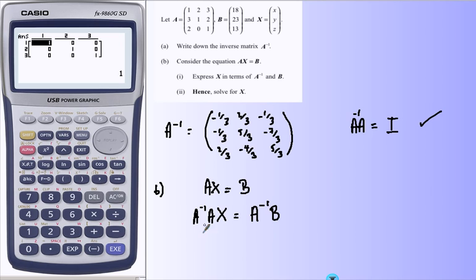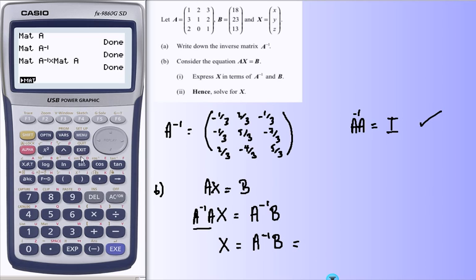And this will give me the identity matrix, the equivalent of 1. And so, to find X, I need inverse of A multiplied by B. And I should have my answer. So, back to the calculator.